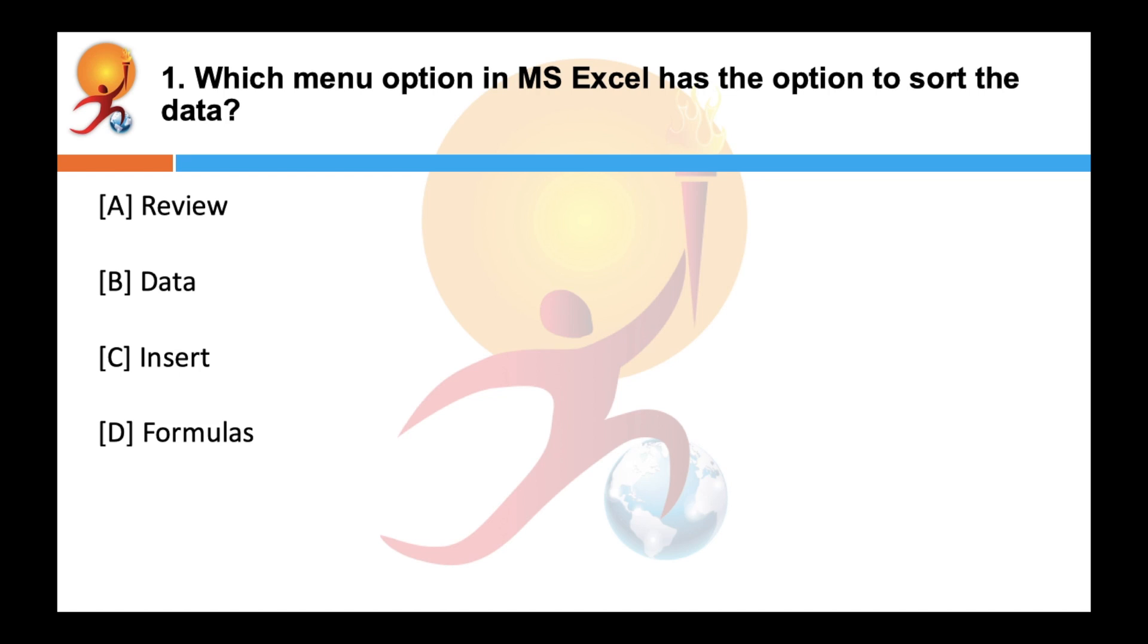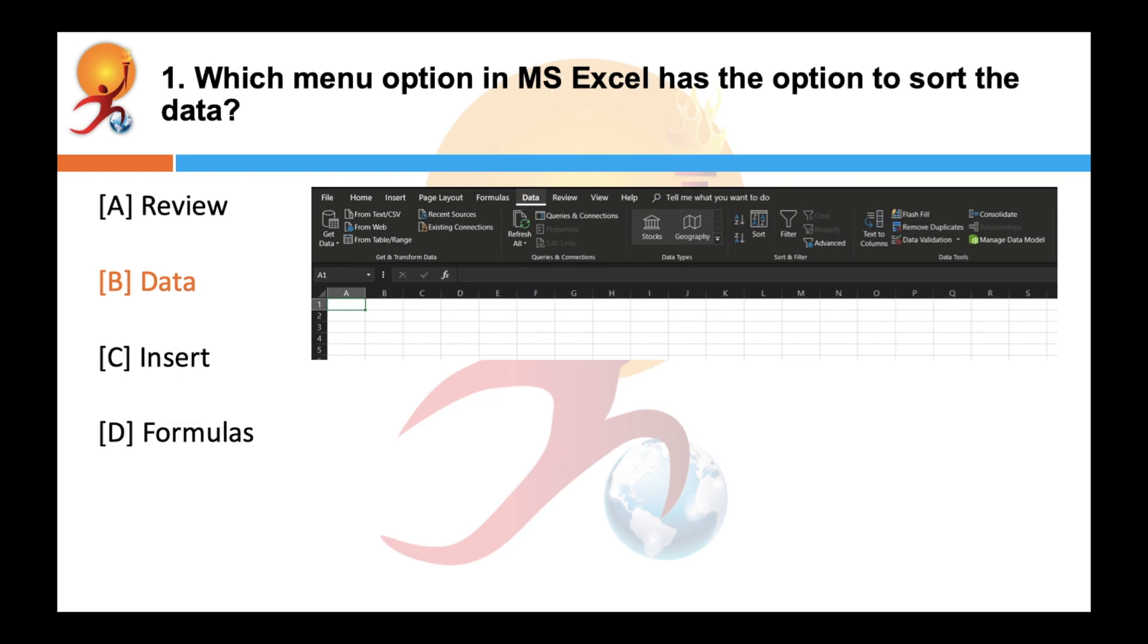Which menu option in MS Excel has the option to sort data? Correct answer is B. The data menu option has the option to sort the data. The data tab in MS Excel contains the sort and filter group which can be used to sort the data.